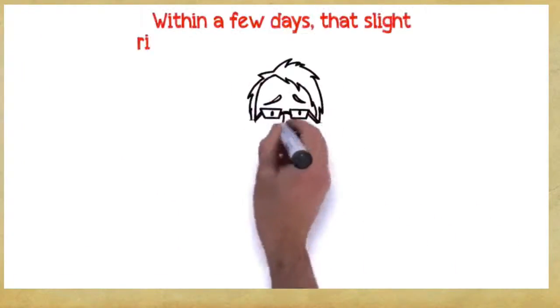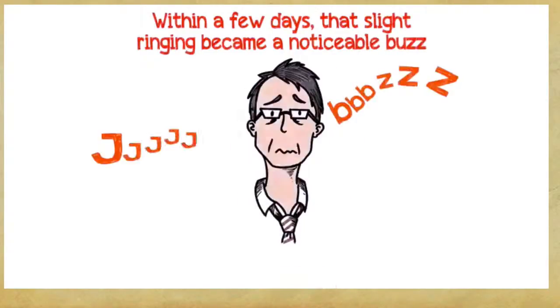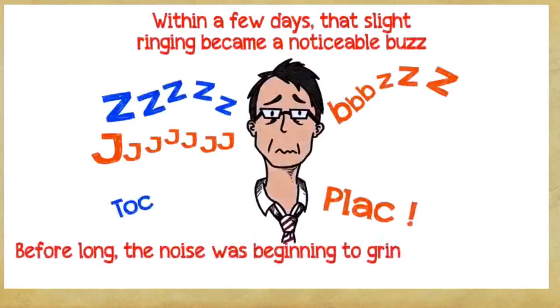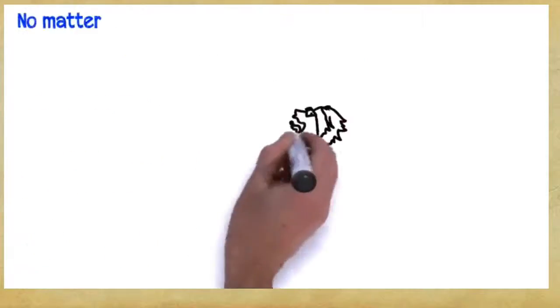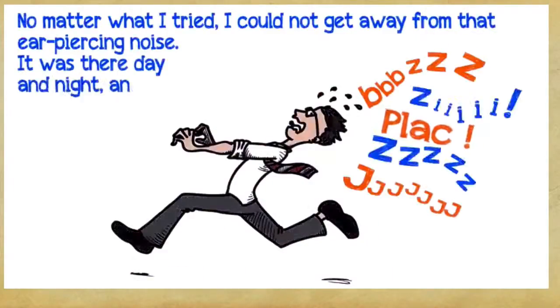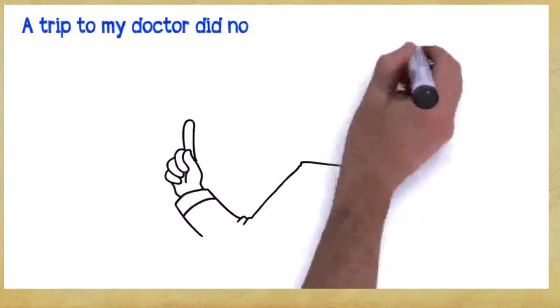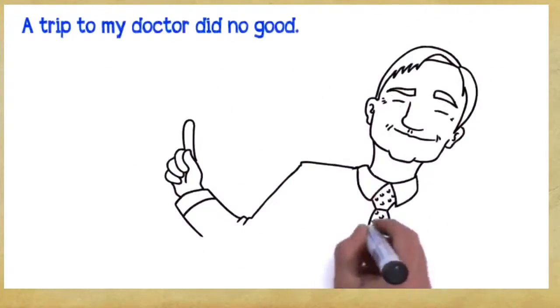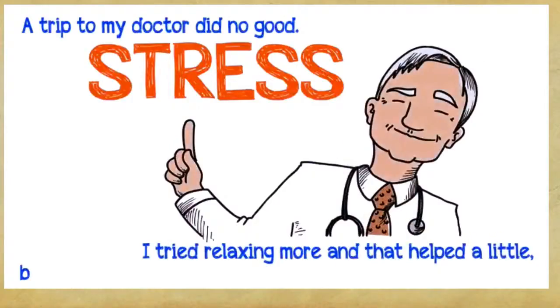Within a few days, that slight ringing became a noticeable buzz, followed periodically by loud bangs. Before long, the noise was beginning to grind up my nerves, and my head felt like it was going to explode. No matter what I tried, I could not get away from that ear-piercing noise. It was there day and night, and it was beginning to take its toll. A trip to my doctor did no good. He thought it was just a migraine induced by stress. I tried relaxing more, and that helped a little, but I still couldn't get rid of that constant buzz in my ears.